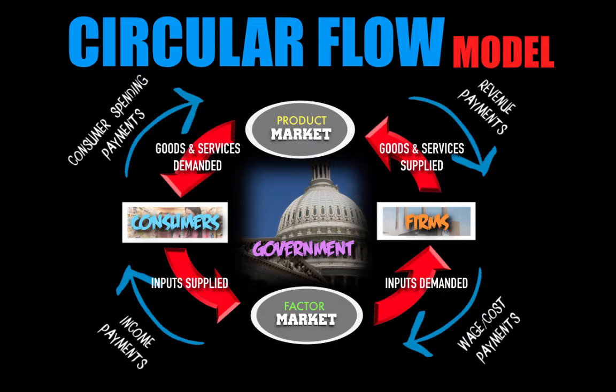Consumer spending becomes revenue payments for firms, which can help them earn profits. The cycle continues endlessly. Firms seek to maximize profits by keeping costs low and generating higher revenue, while consumers seek to increase their wages for greater disposable income. If one of the markets fails, government intervenes to correct the failure and let the Circular Flow Model take hold again.